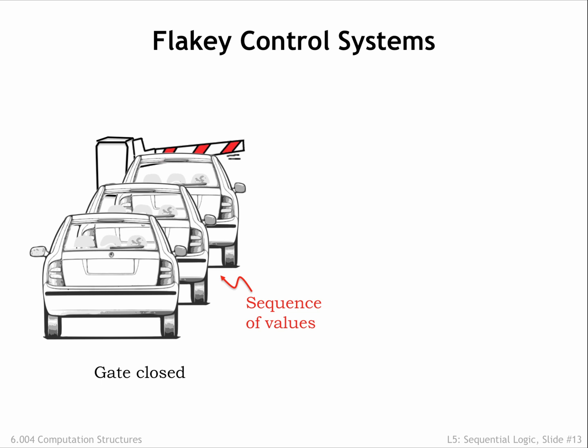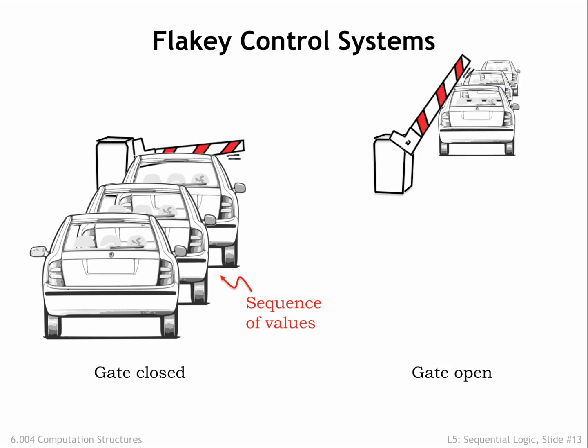Here's an analogy that will help us understand what's happening and what we can do about it. Imagine a line of cars waiting at a tollbooth gate. The sequence of cars represents the sequence of states in our sequential logic, and the gated tollbooth represents the latch. Initially, the gate is closed and the cars are waiting patiently. When the gate opens, the first car proceeds out of the tollbooth. But the timing of when to close the gate is tricky — it has to be open long enough for the first car to make it through, but not too long lest the other cars also make it through. This is exactly the issue we faced with using the latch as our memory component.